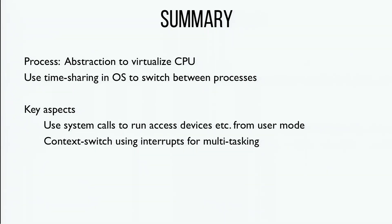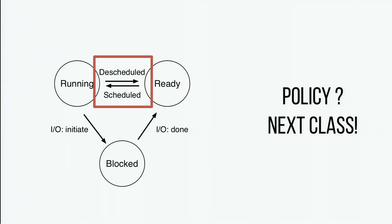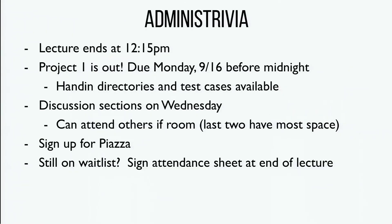Today we've been learning about how to virtualize the CPU. Our abstraction is a process — and then there are threads. We're going to use time sharing to share the processor across multiple processes. A key part is being able to do system calls, which allows us to access devices with specialized instructions inside the kernel. The context switch is the mechanism that allows us to switch between different processes. Policy — what we'll talk about next class — is much easier: we just make high-level decisions about which process to run.